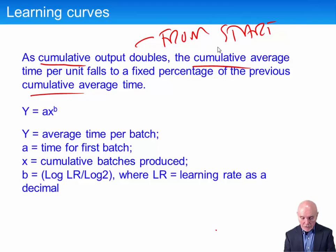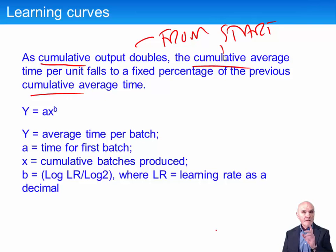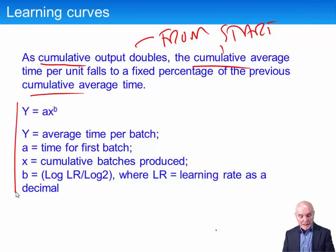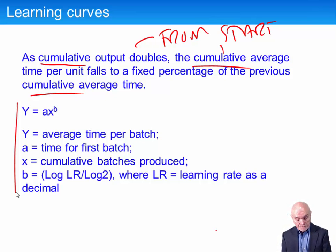All of these cumulatives — cumulative times, cumulative average unit times, cumulative production — are from the very first batch or the very first unit that's been made. Mathematically, it can be represented by an equation, which we'll come on to look at. We think this equation will be given to you in the exam.